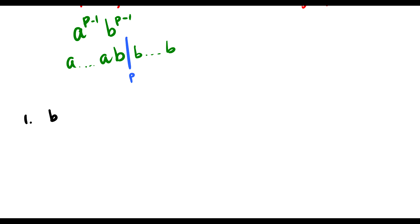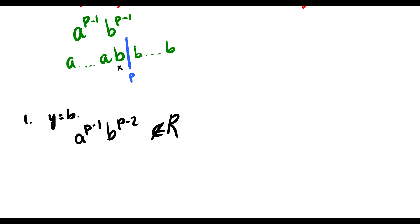We know a^(p-1) b^(p-1) is in R. If we pump y = b down, we're left with a^(p-1) b^(p-2). But now we don't have the same number of a's and b's, so pumping it down means it's not in R. Similarly, if we pump it up and add another b, it's also not going to be in R because we'll have more b's than a's. So picking y = b doesn't work.